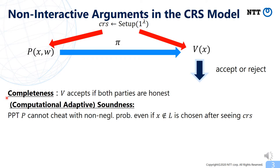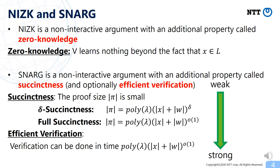We require the following two properties for non-interactive arguments. The first is completeness, which means that if the protocol is run honestly, then the Verifier accepts with probability 1. The second is soundness — specifically, computational adaptive soundness — which means a computationally bounded Prover cannot convince the Verifier of a false statement. Adaptive means the Prover can choose a false statement x depending on the common reference string. If we only consider completeness and soundness, the notion is trivial, because the witness itself can serve as a proof.